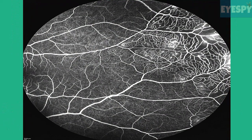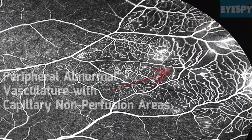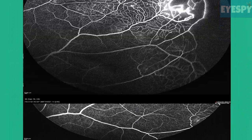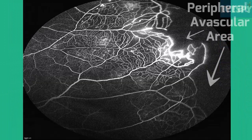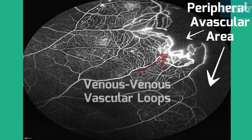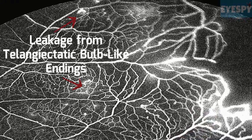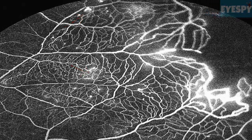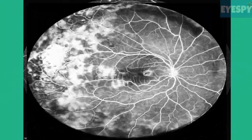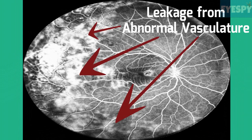The temporal periphery shows abnormal vasculature with capillary non-perfusion areas. An avascular area is very evident in the temporal periphery with staining of venous-venous vascular loops and some leakage of dye from telangiectatic bulb-like endings, while the right eye shows florid leakage from abnormal vasculature present mainly in the temporal quadrant and also in the superior and inferior quadrant.